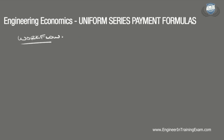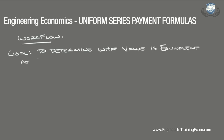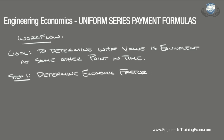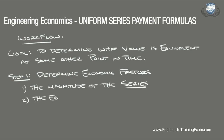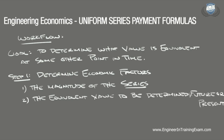Let's run through a general workflow. The goal of any uniform series payment problem is to determine what single monetary value would be equivalent at some other point in time based off specific economic factors. The first step is to determine the various factors of importance: number one, the magnitude of the series to be analyzed; number two, the equivalent value to be determined, a future or present value; number three, the interest rate; and number four, the number of periods.